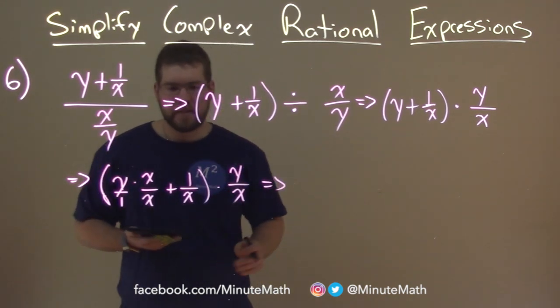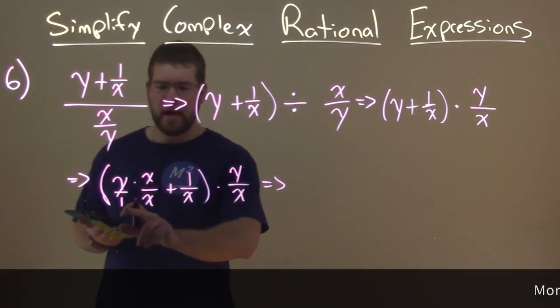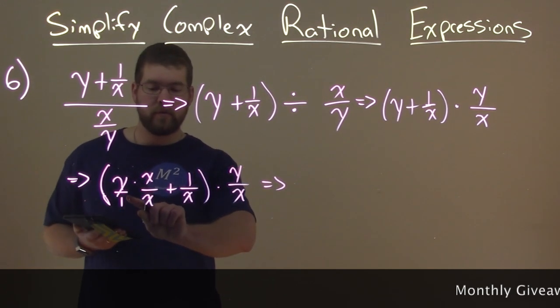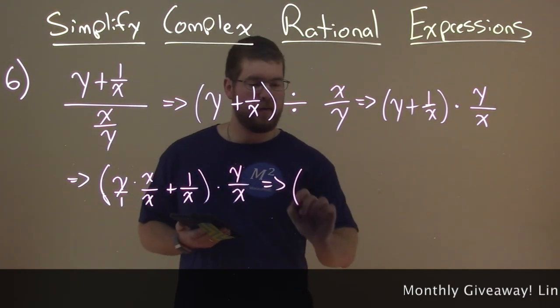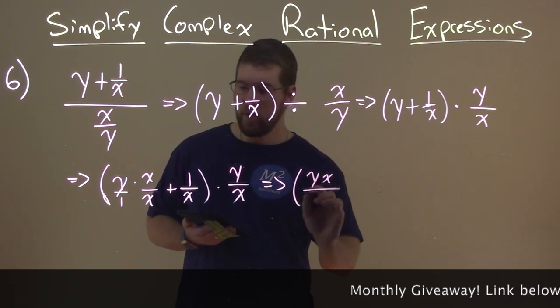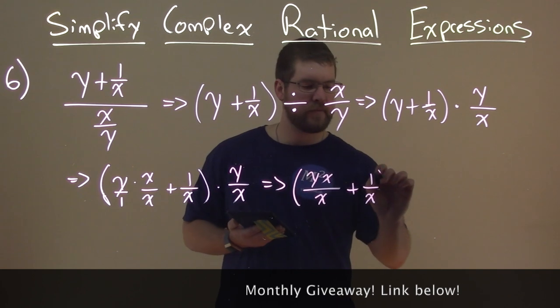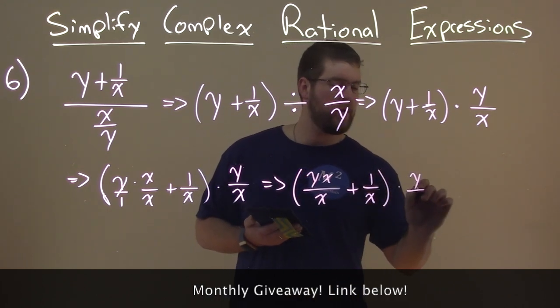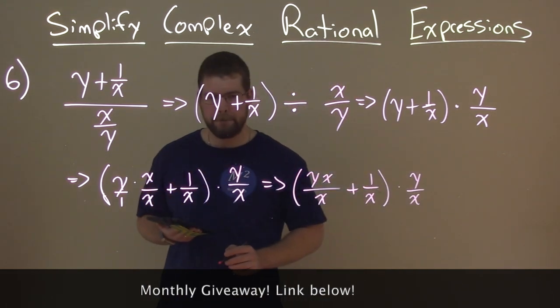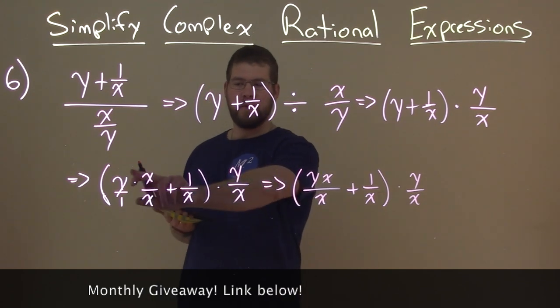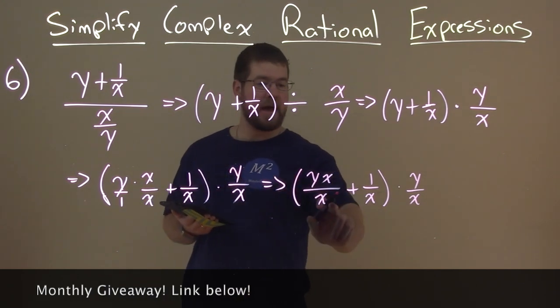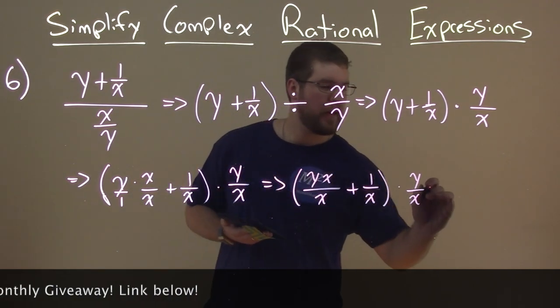Going sideways, keep transitioning here. Now we can simplify this part here. Multiply y and x. So we have yx over x plus 1 over x times y over x. Okay? Now we can, we see we have a common denominator. So now we can add them together. So let's do that right here.